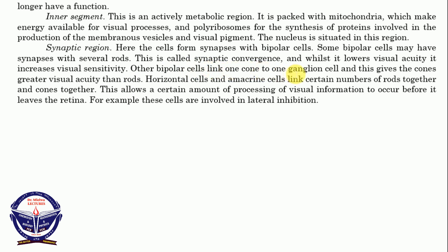Other bipolar cells link one cone to one ganglion cell, and this gives cones greater visual acuity than rods. One cone links to one bipolar neuron to one ganglion cell, while many rods link to one bipolar cell, and many bipolar cells link to one ganglion. That increases the sensitivity but lowers the acuity. Horizontal cells and amacrine cells link certain numbers of rods and cones together. This allows a certain amount of processing of visual information to occur before it leaves the retina. For example, these cells are involved in lateral inhibition, as we shall discuss later.